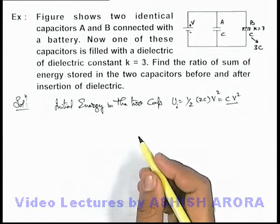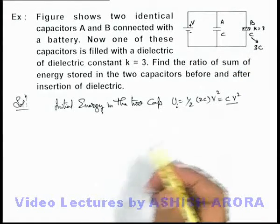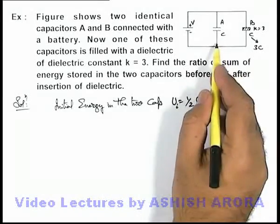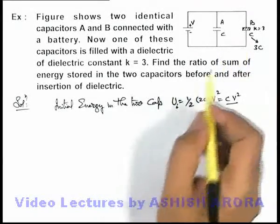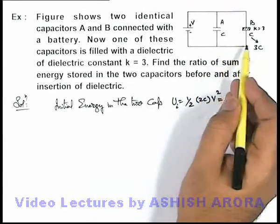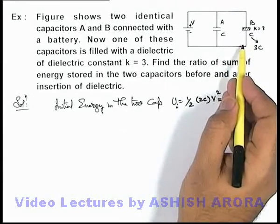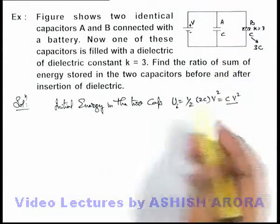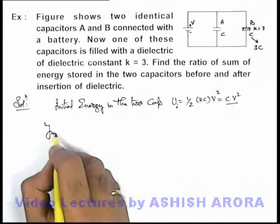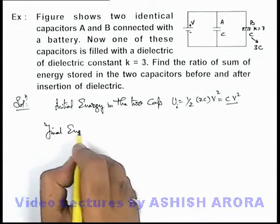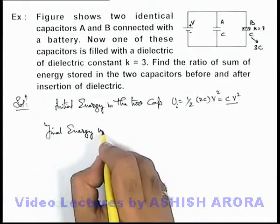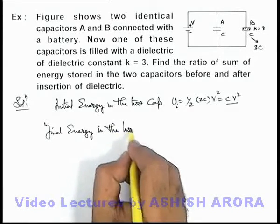Now in this situation, if we wish to find out the final energy stored in the capacitors, again as the two are connected in parallel, the total capacitance of the system can be written as kC plus C. So we can directly write the final energy in the two capacitors.